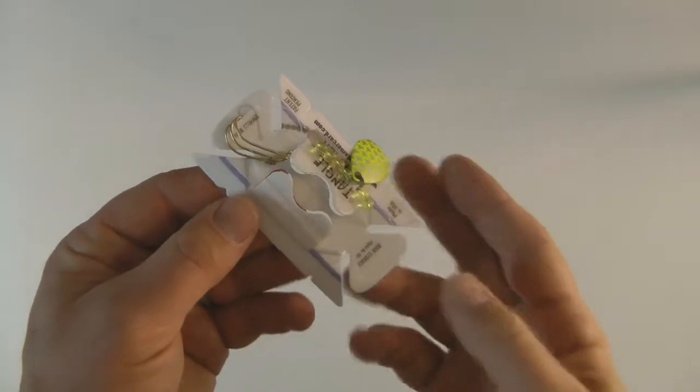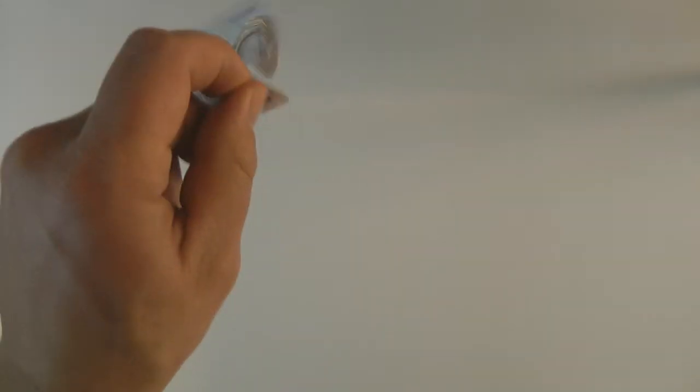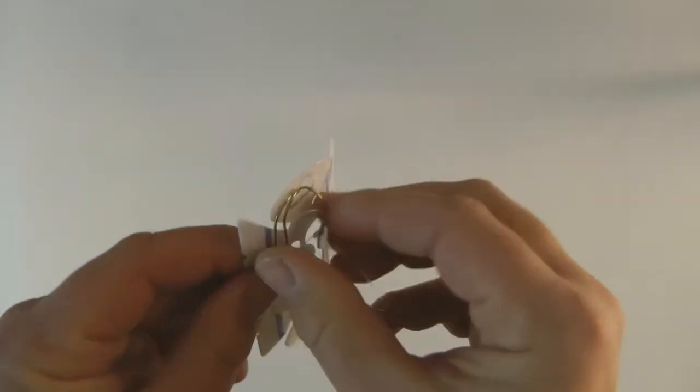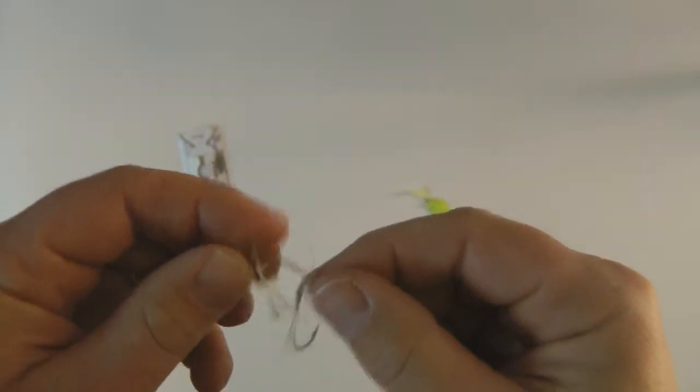To remove the line from the card, hold the end of the line with the beads and blades in your hand. Now drop the card. The card is connected to the hook so you don't have to bend over and pick it up. Disconnect the hook and you're ready to go fishing.